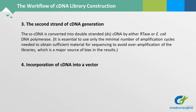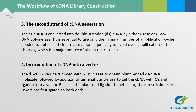Step 4: Incorporation of cDNA into a vector. The double-stranded cDNA can be trimmed with S1 nuclease to obtain blunt-ended double-stranded cDNA, followed by addition of terminal transferase to tail the cDNA, with subsequent ligation into a vector. Because blunt-end ligation is inefficient, short restriction site linkers are first ligated to both ends.